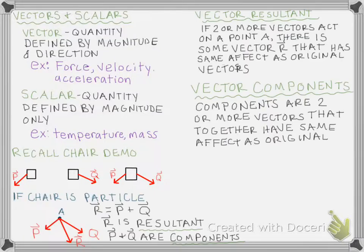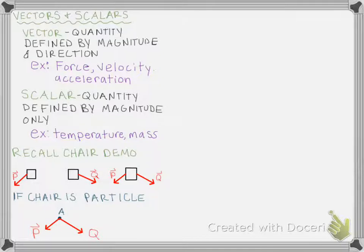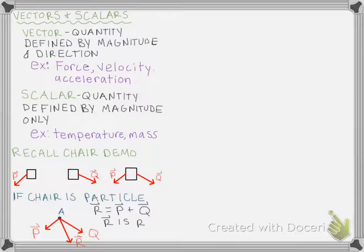I'm going to represent the chair as a particle, marked as A in the figure. I have my two original forces P and Q, and we deduced that there is some other force R — the combination of the two pulls P and Q — that makes the chair want to move along R. So we can write that R is equal to P plus Q, and we say that R is the resultant of P and Q. We can also say that Q and P are components of force R.